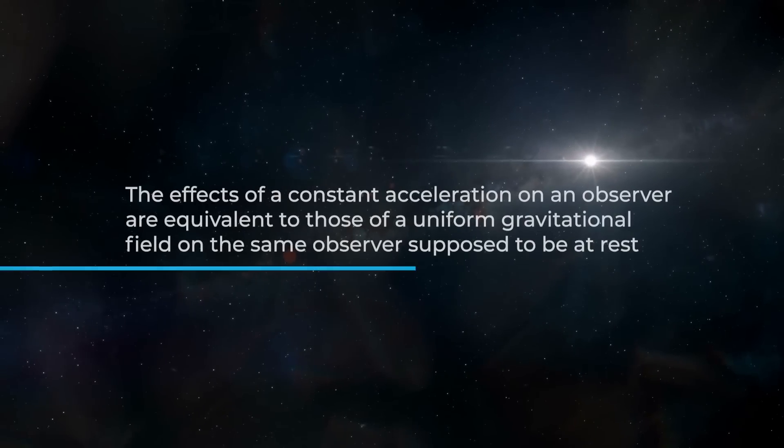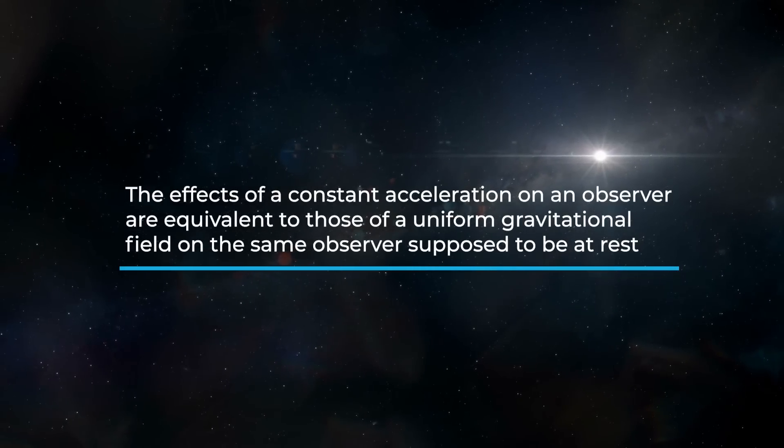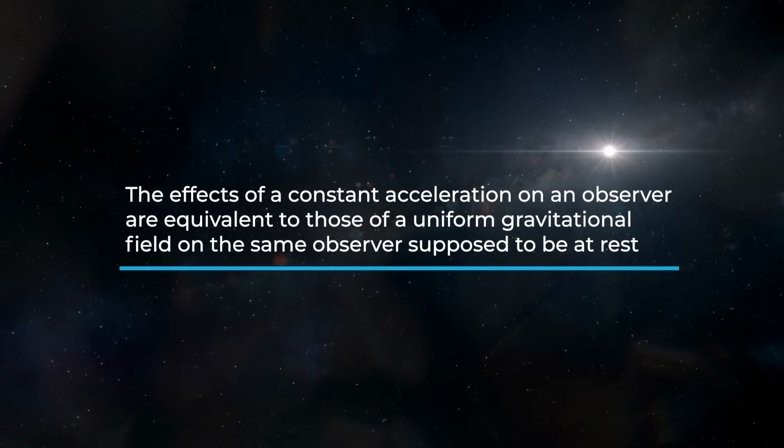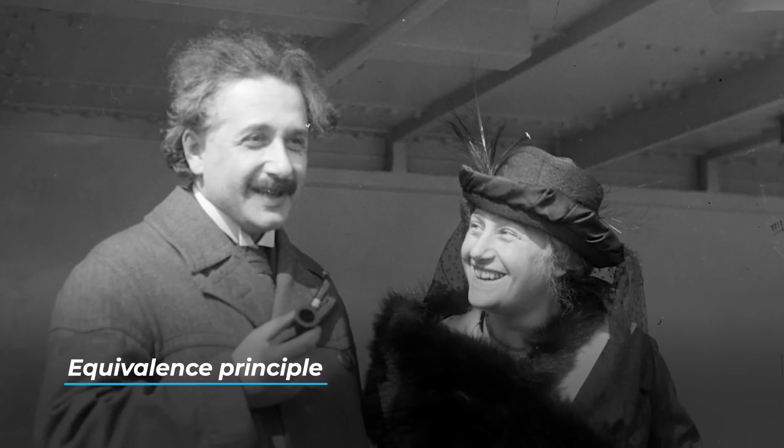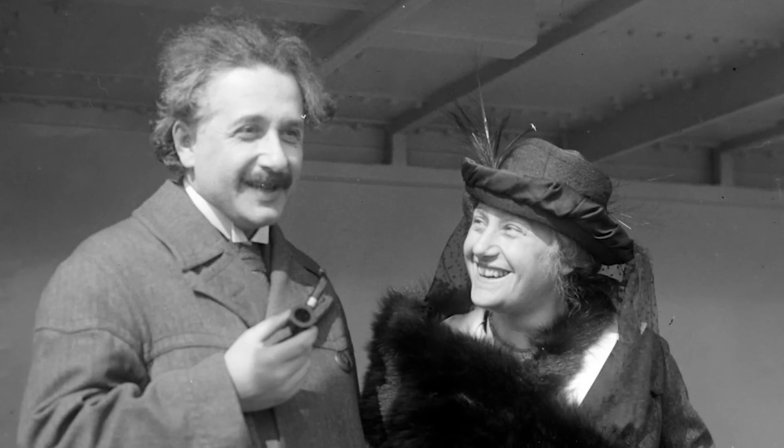It can therefore be stated that the effects of a constant acceleration on an observer are equivalent to those of a uniform gravitational field on the same observer supposed to be at rest. This consists of the famous equivalence principle formulated by Einstein in 1911.